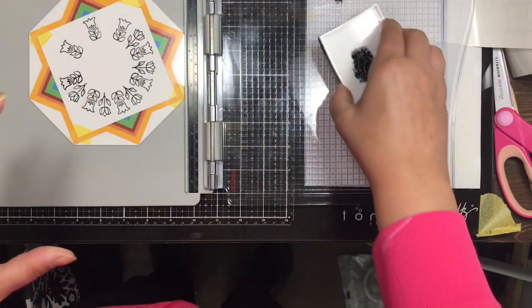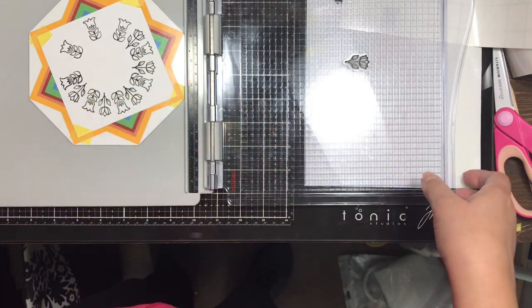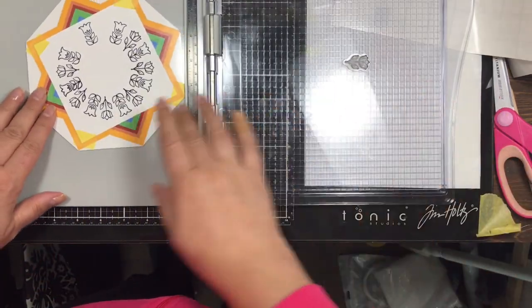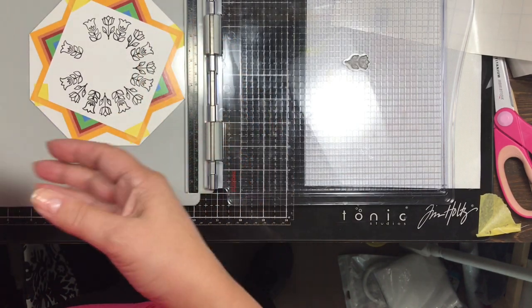Then I wind up using Prismacolors in sort of like a rainbow fashion and I do that coloring off-camera, but I will show you what the final card looks like once I assemble the card and put it all together.